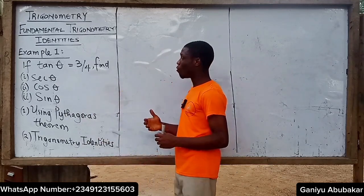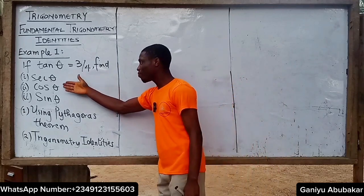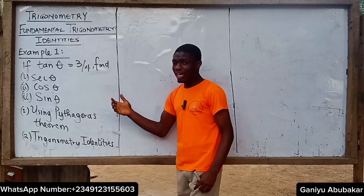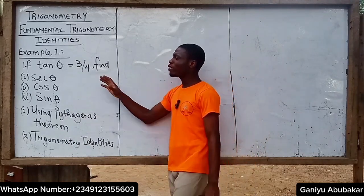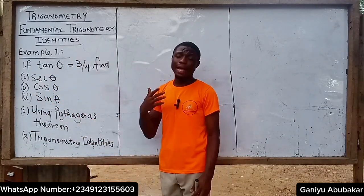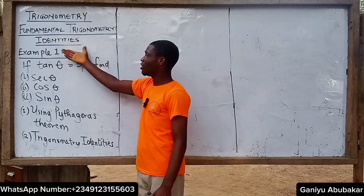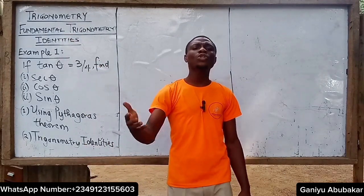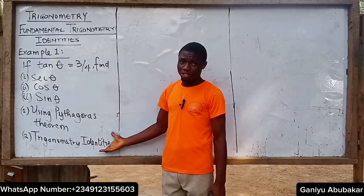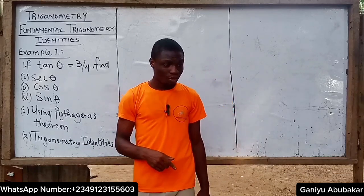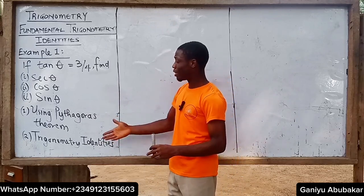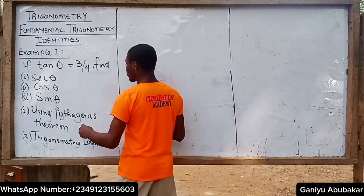The question says: if tan θ equals three over four, find: number one, sec θ; number two, cos θ; and number three, sin θ. I can solve this problem in two ways — either using the concept of Pythagoras' theorem, or using the concept of trigonometry identity. I'll be showing you the steps to apply both methods. Let's start with the first solution using Pythagoras' theorem.